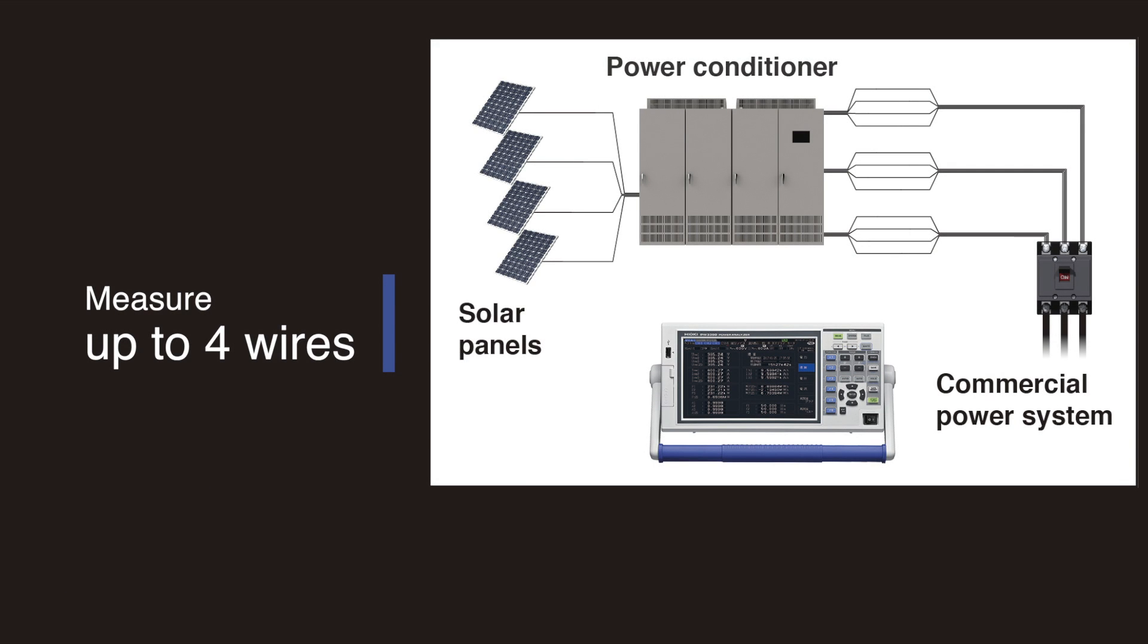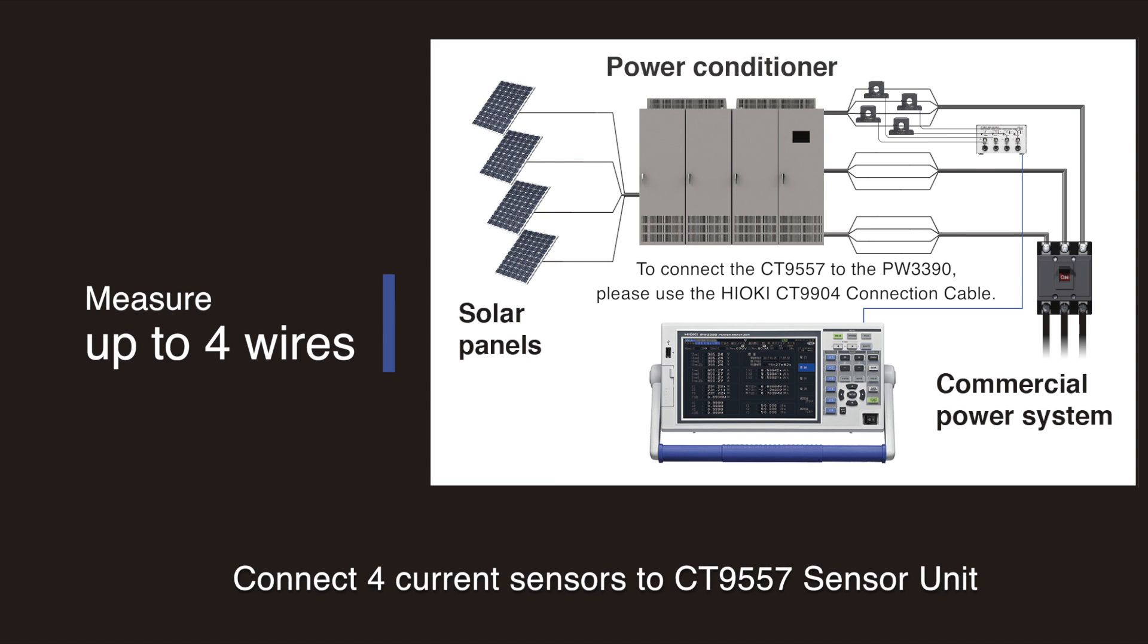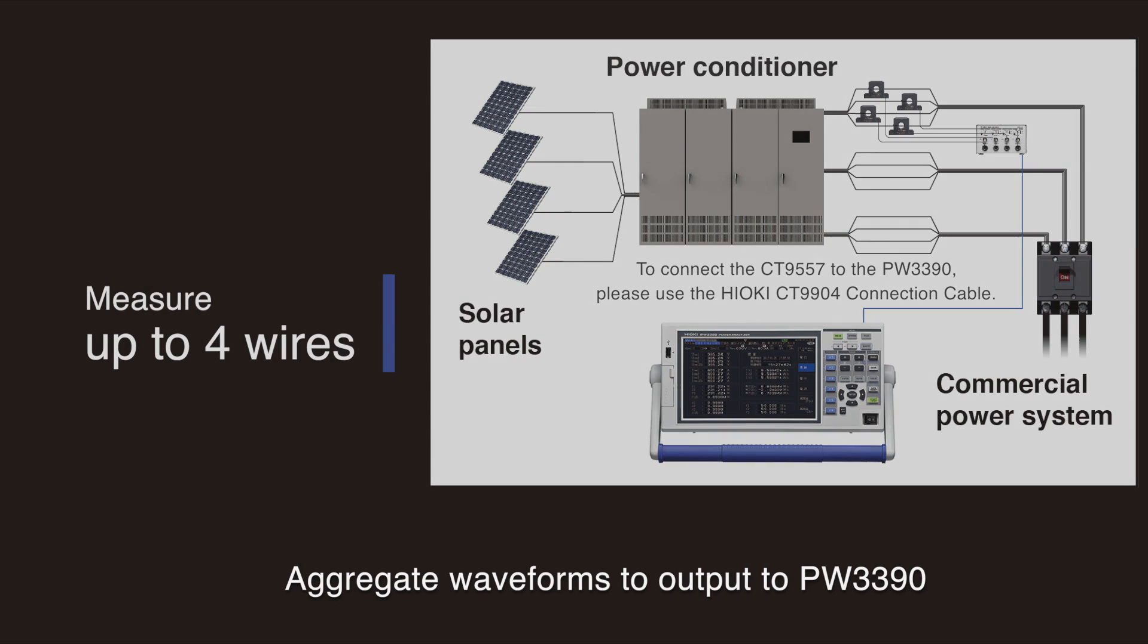Simultaneously measure up to four wires and eliminate difficulties testing large amounts of current flowing through multiple cables. Simply connect four current sensors to the power analyzer through the CT9557 sensor unit. The unit aggregates the waveforms and outputs to the PW3390.